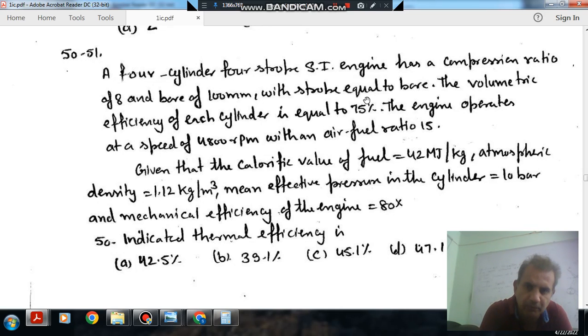Given that the calorific value of fuel is equal to 42 MJ per kilogram, atmospheric density 1.12 kg per meter cube, mean effective pressure in the cylinder 10 bar, and mechanical efficiency of the engine 80%.